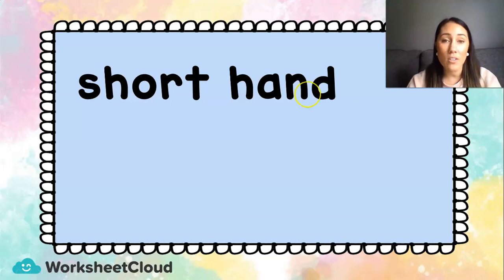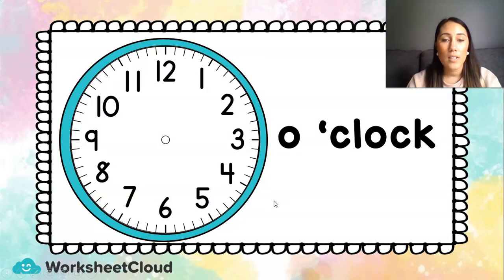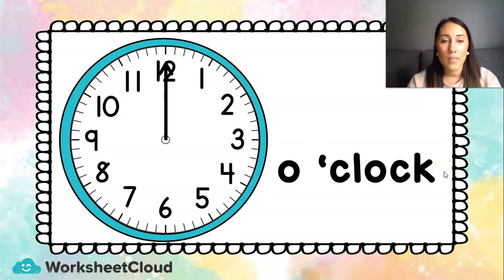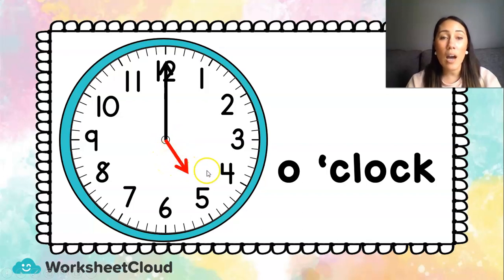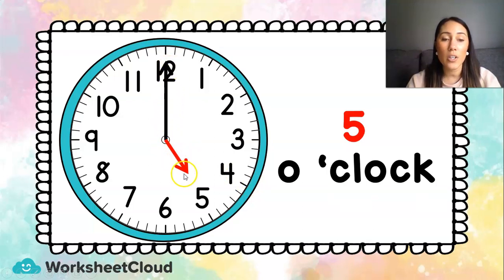The short hand on the clock is a short arrow, and that tells us the hour. When the long hand is on the 12, that tells us it is o'clock. The short hand then tells me the hour — which hour of the day we are working in. If the short hand is showing a five, it is five o'clock. Remember, we always look at the long hand first, and then we look at the hour.